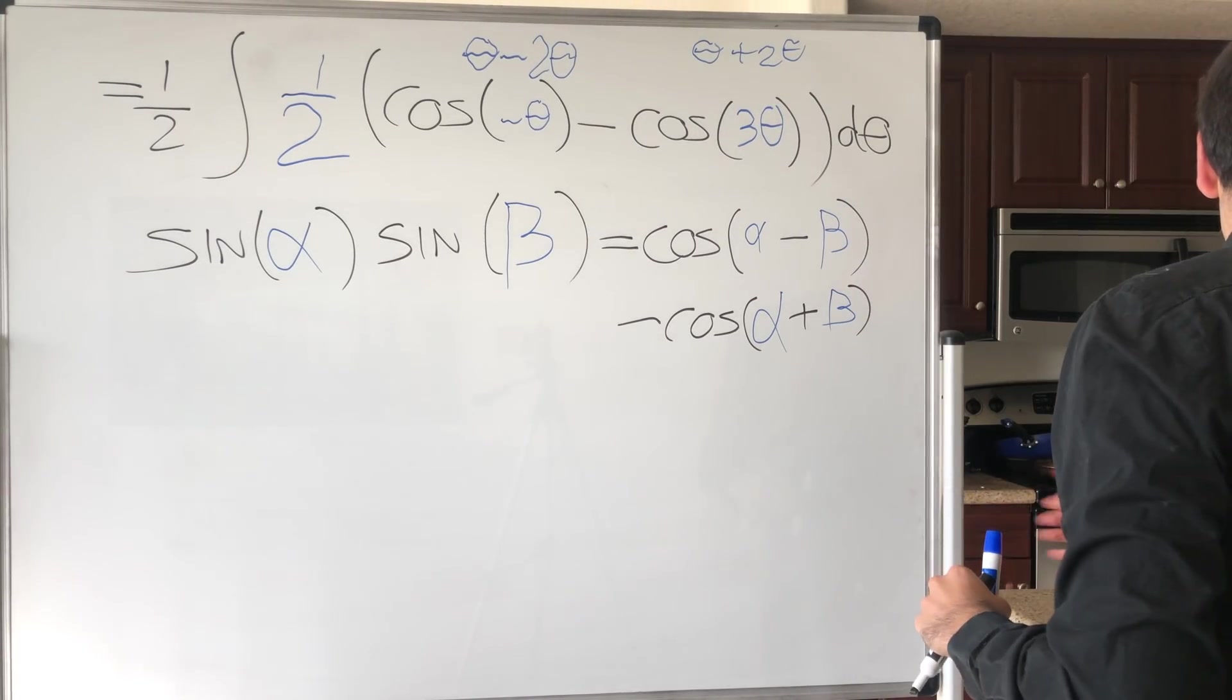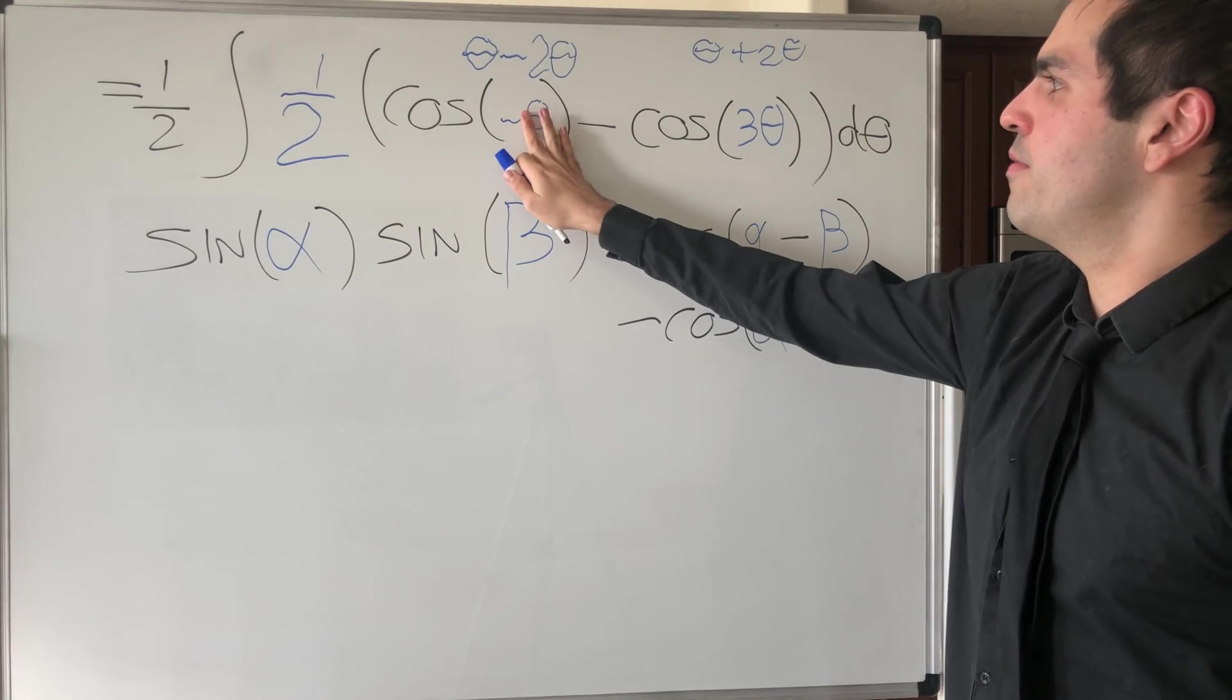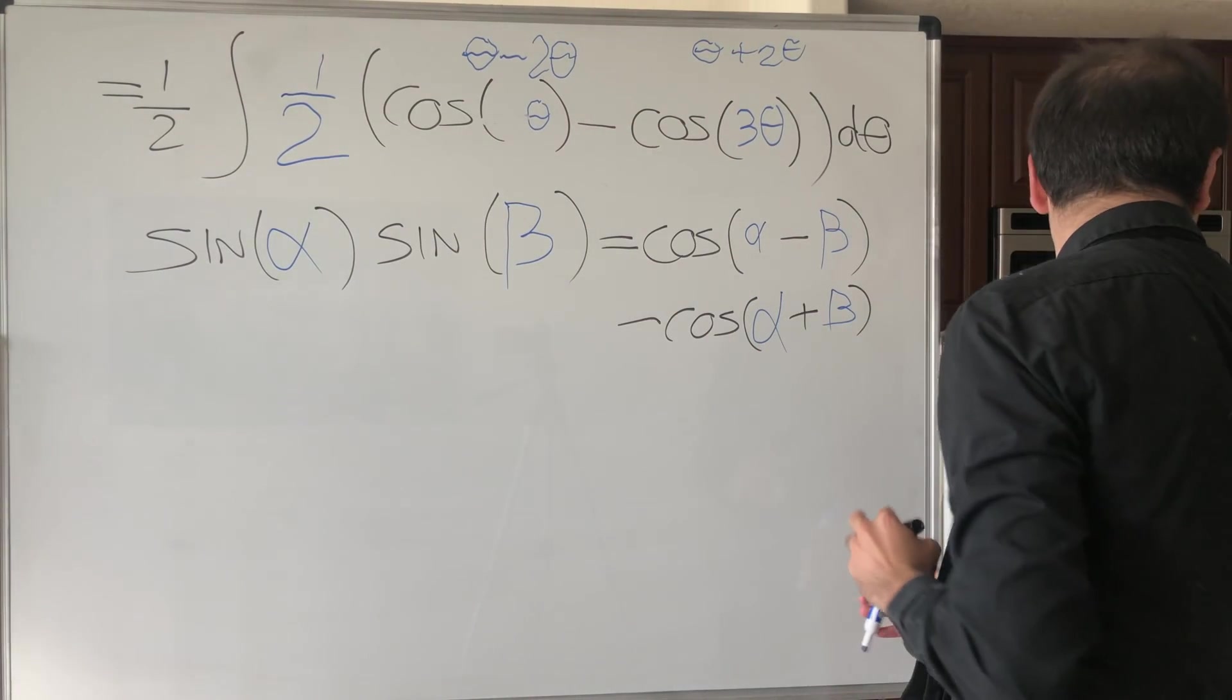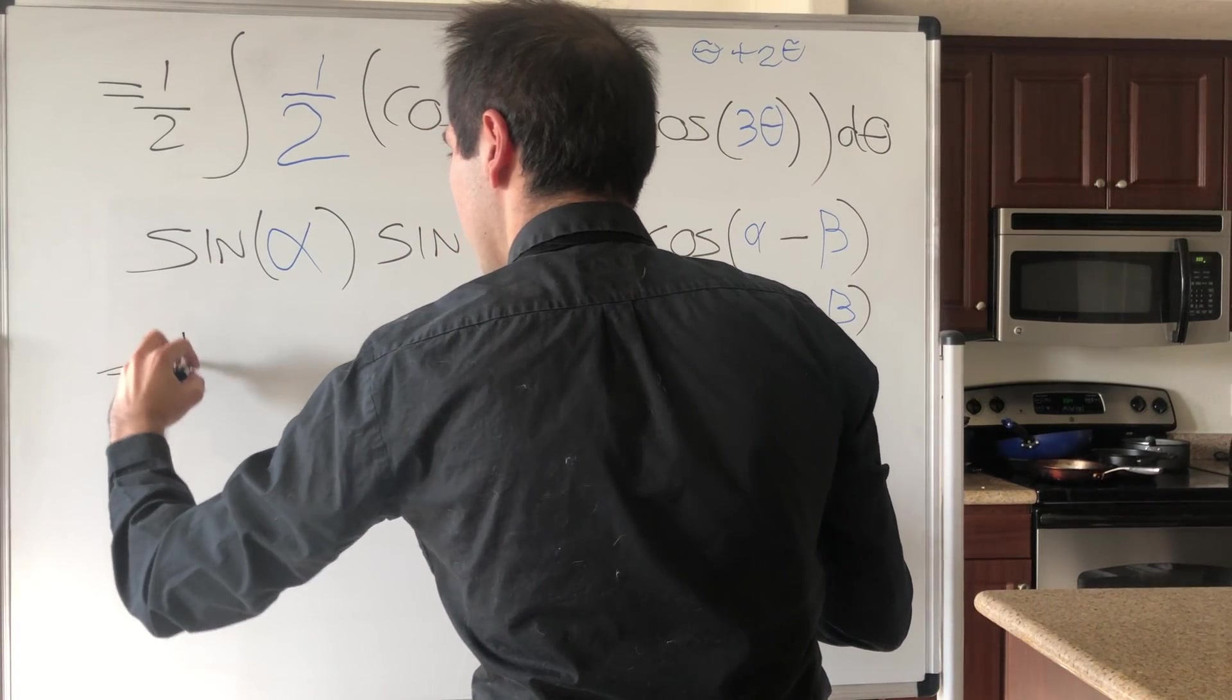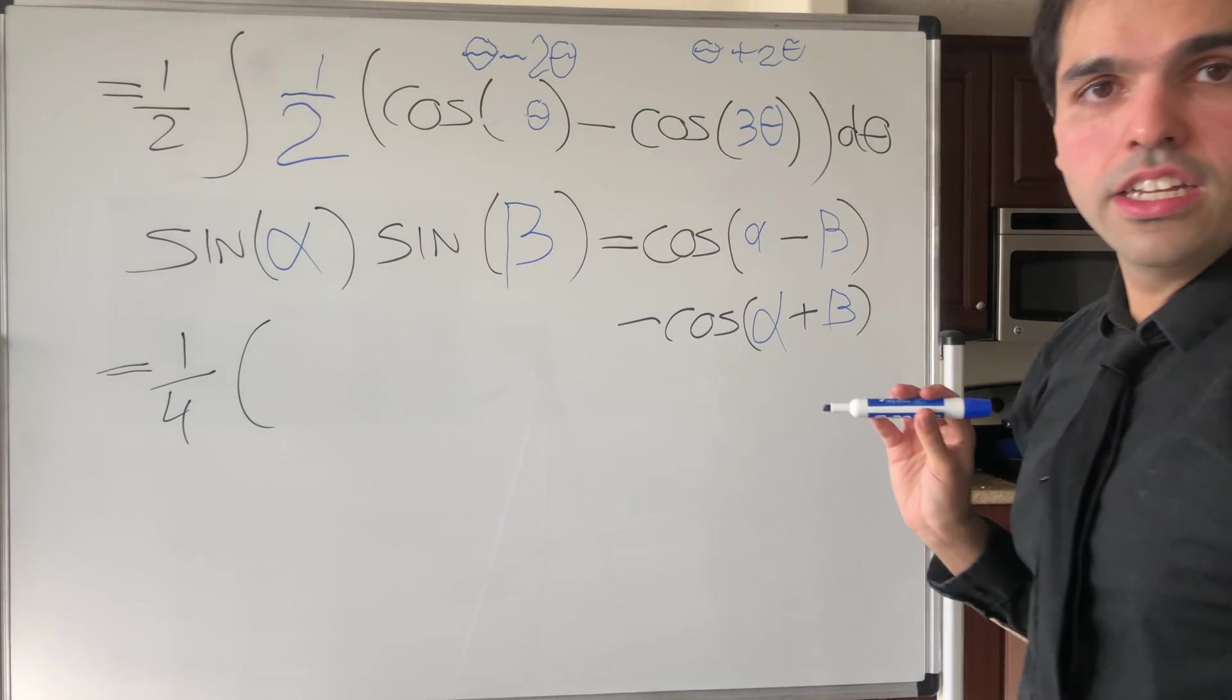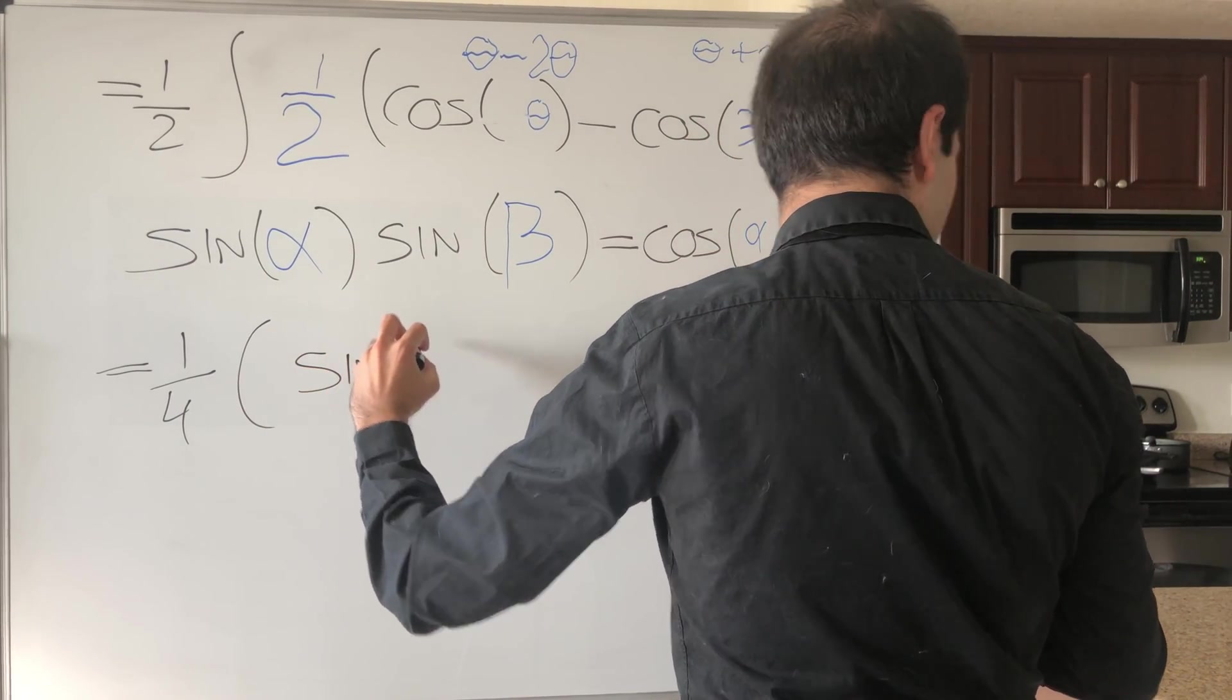And then the nice thing is, cosine of minus theta, that's the same thing as cosine of theta. And then what you just do, you just integrate this. So you do get, I believe, this one quarter, if I'm not mistaken, one quarter and then times, right, now, antiderivative of cosine, that is sine, so sine of theta.